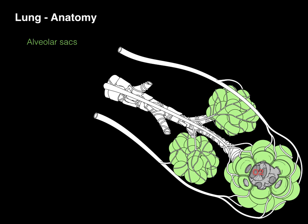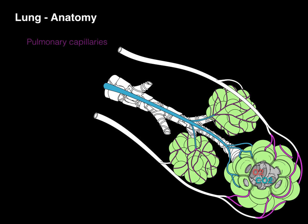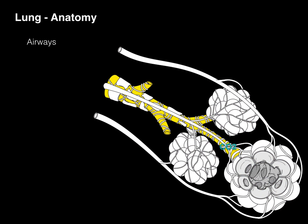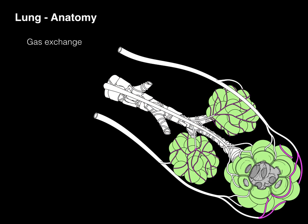A pulmonary artery carries carbon dioxide from the right side of the heart down to pulmonary arterioles. Gas exchange occurs at the pulmonary capillaries within the alveolar sacs. Oxygen courses out of the pulmonary capillaries into the pulmonary veins and out to the left atrium of the heart, whereas carbon dioxide courses out through the airways, trachea, and out the mouth. Gas exchange, which is so important in lung anatomy, occurs right there at the alveolar sacs and pulmonary capillaries.